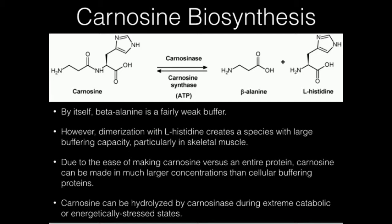If we are in an energetically stressed or catabolic state, there's another enzyme called carnosinase, which is a hydrolase, that's going to hydrolyze carnosine back into histidine and beta-alanine, and the beta-alanine can be recycled that way. When you combine beta-alanine and histidine into a dipeptide, the buffering capacity goes sharply up. Carnosine is a very good buffer in skeletal muscle, and that's the main tissue that's going to express either one of these enzymes.